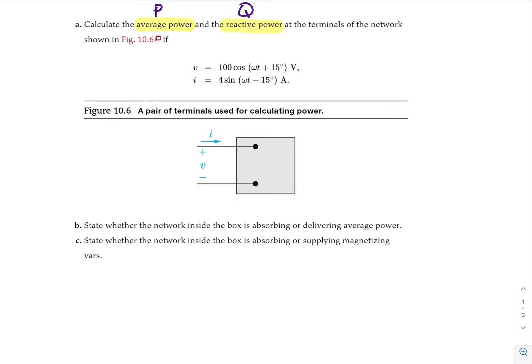Then we are asked to state whether the network inside the box is absorbing or delivering average power, or whether the network inside the box is absorbing or supplying magnetizing vars. So this is P, and this one is Q.